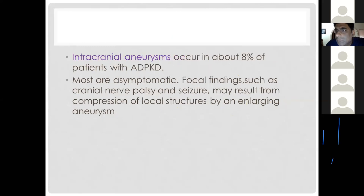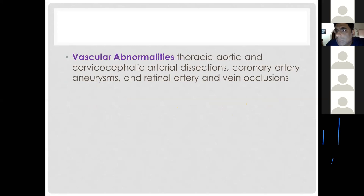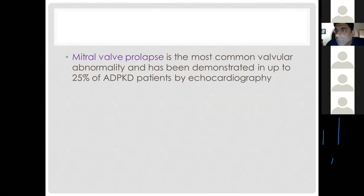Intracranial aneurysms occur in about 8 percent of ADPKD patients, who can present with subarachnoid hemorrhage or, in milder cases, headache only. Vascular abnormalities also include thoracic aortic and cervical arterial dissections, coronary artery aneurysms, and retinal artery and vein occlusions. Additionally, 25 percent of ADPKD patients demonstrate mitral valve prolapse, usually diagnosed on echocardiography.